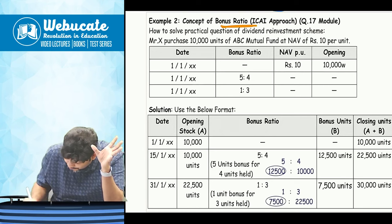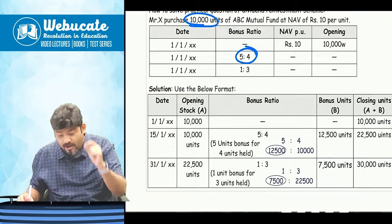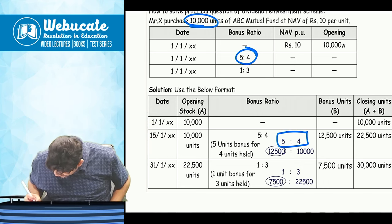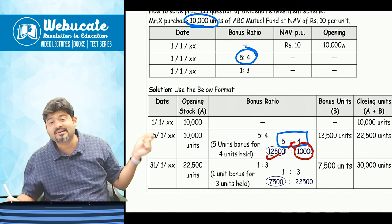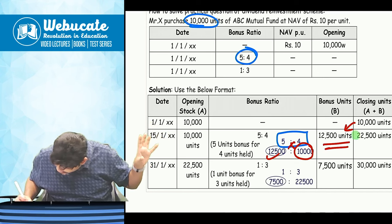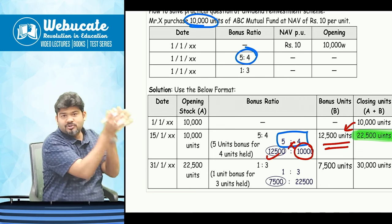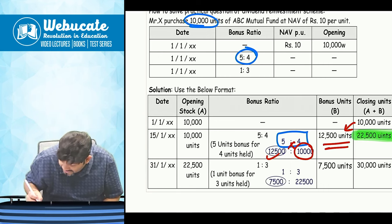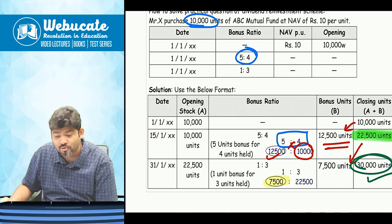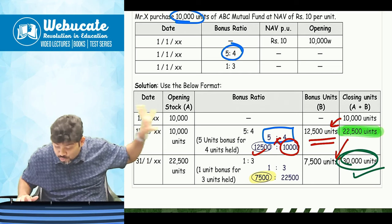There is also a concept of bonus ratio. Suppose you have 10,000 units and the company issues bonus in ratio 5:4 — you get 5 units for every 4 held. Cross multiply: 10,000 × 5 ÷ 4 = 12,500 bonus units. Total units = 22,500. Another bonus of 1:3 — 1 unit for every 3 held: 22,500 × 1 ÷ 3 = 7,500 bonus units. Total closing units = 30,000. These are multiplied by the prevalent NAV.